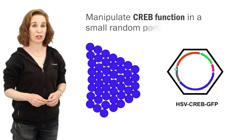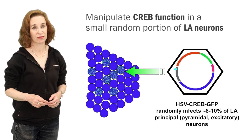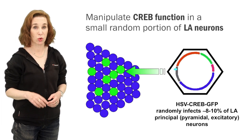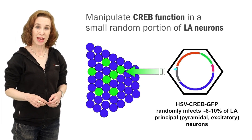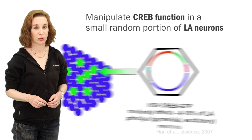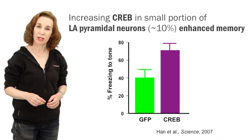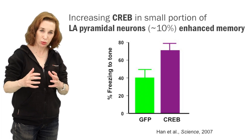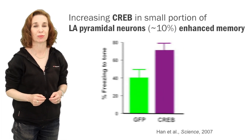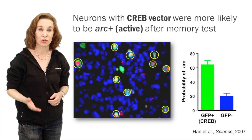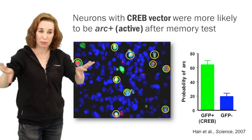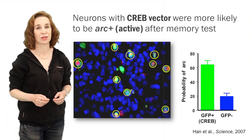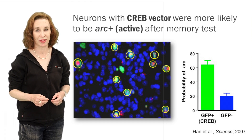We previously used replication-defective herpes simplex viral vectors to overexpress the transcription factor CREB in a small portion of LA neurons. HSV infects pyramidal or principal neurons in the LA. We showed that neurons with relatively higher levels of CREB were selectively recruited into a fear memory trace — that is, neurons with increased levels of CREB seem to out-compete their neighbors for allocation to a memory trace. And these neurons are necessary for subsequent expression of that memory.